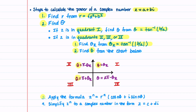Our third step is to apply the formula given by De Moivre's Theorem. Our last step is to simplify z to the n so that it becomes a complex number in the form z equals c plus di.